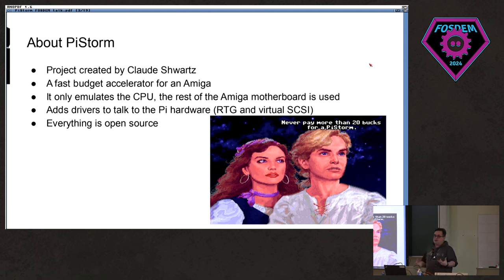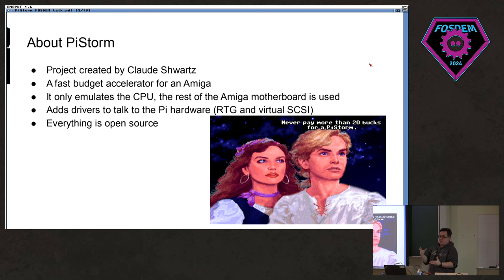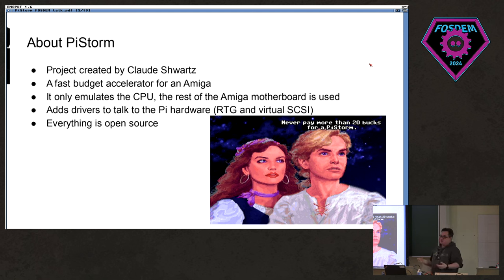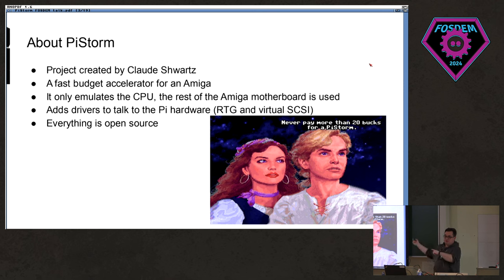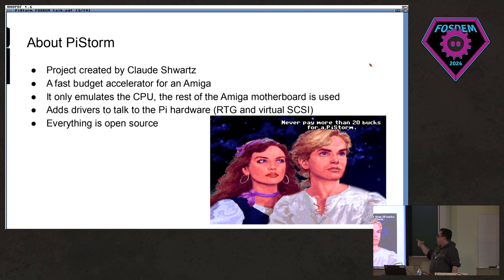You can get a lot of compute resources from something called a Raspberry Pi, which you probably all know about. What this essentially does is emulate the 68000 processor on a Raspberry Pi running Linux originally, but the rest of the Amiga motherboard is used. It also adds RTG — Retargetable Graphics — which is essentially like a second graphics card for your Amiga. This is what I'm actually projecting from right now. It also adds virtual SCSI.